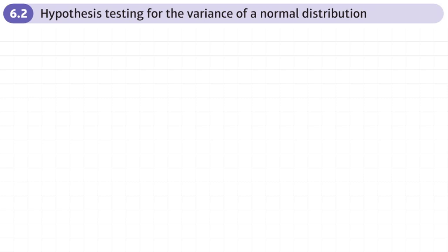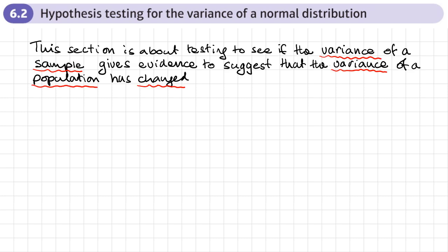This is the second section of chapter 6: further hypothesis tests. This section is on hypothesis testing for the variance of a normal distribution. It's all about testing to see if the variance of a sample gives evidence to suggest that the variance of a population has changed, so we're taking the sample from a population, measuring its variance, and then doing a hypothesis test to see whether there's evidence to suggest that the variance of the population has changed.